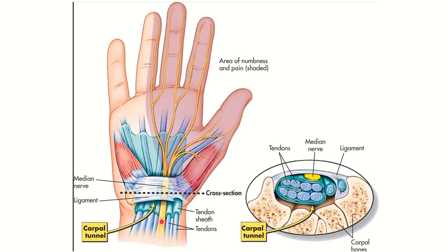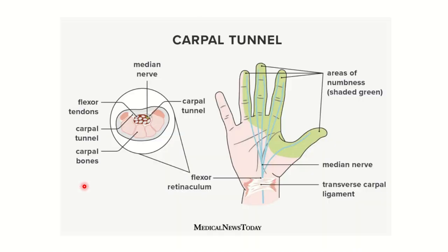There is a nerve here which is the median nerve — we can see it in this picture as well. The median nerve supplies the lateral three and a half fingers of the hand. This median nerve is stressed frequently when the patient uses their hand frequently, as in this question where the woman frequently uses her hands. Here we can see the carpal tunnel.